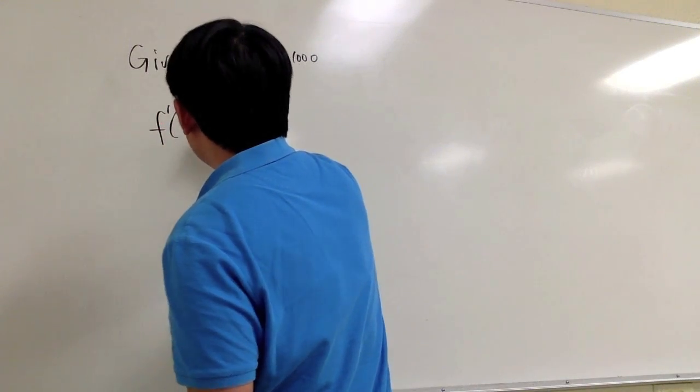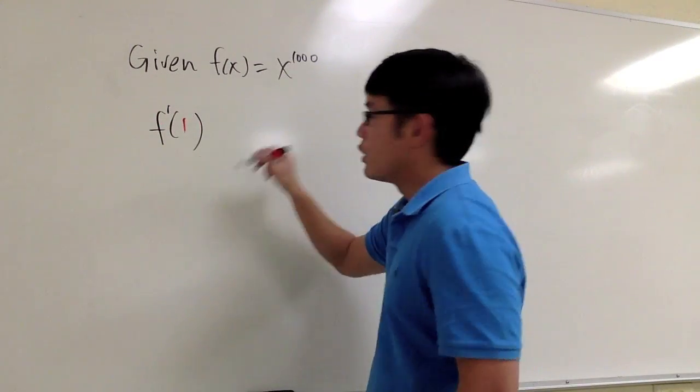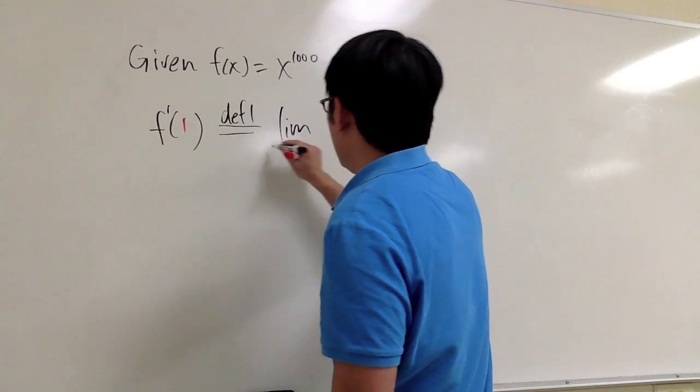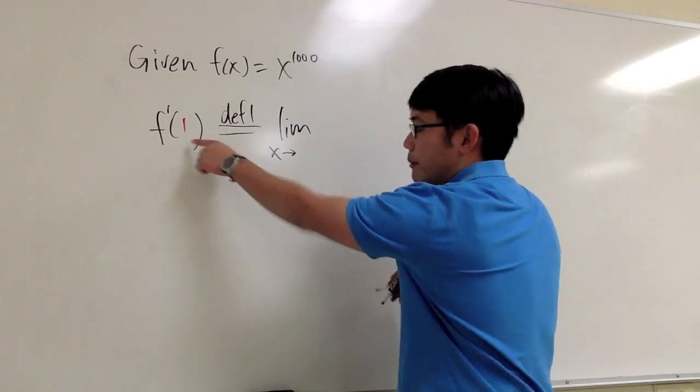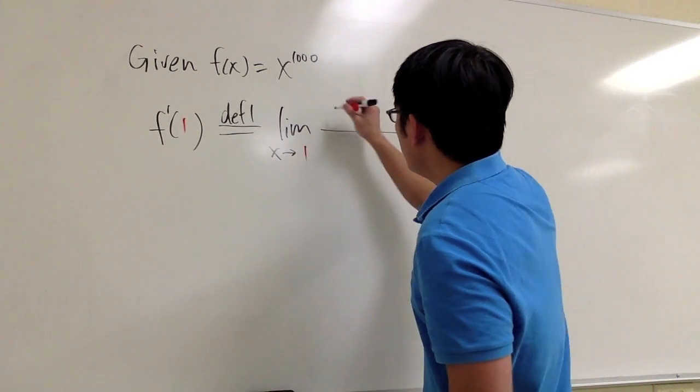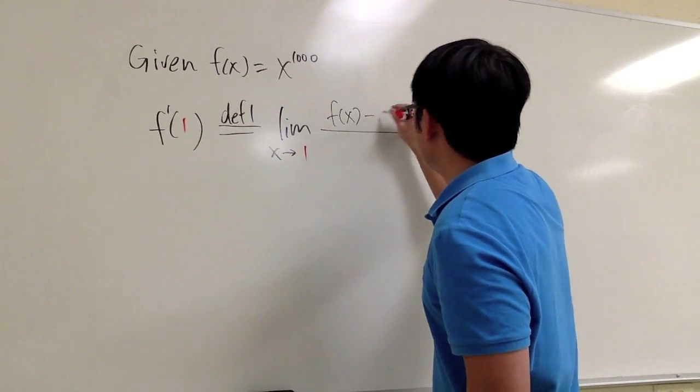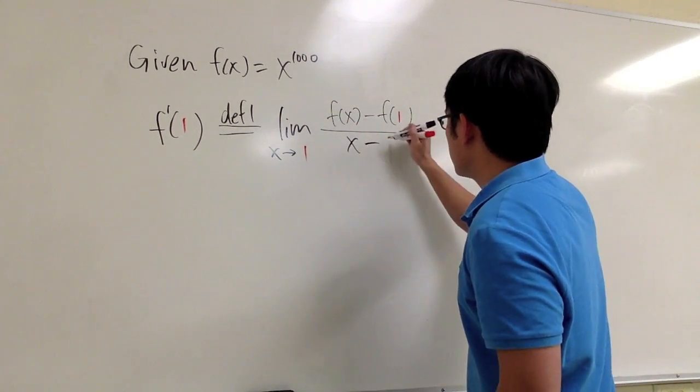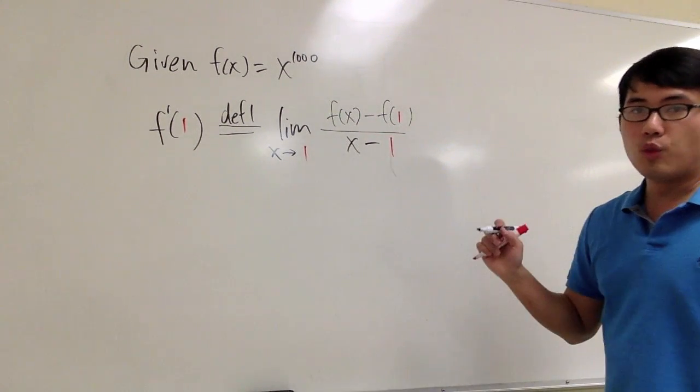We have two definitions, and for definition number 1, it's a limit as x goes to the number that we are looking for, which is 1. And here we are going to get f of x minus f of 1 over x minus 1. And that's definition 1.